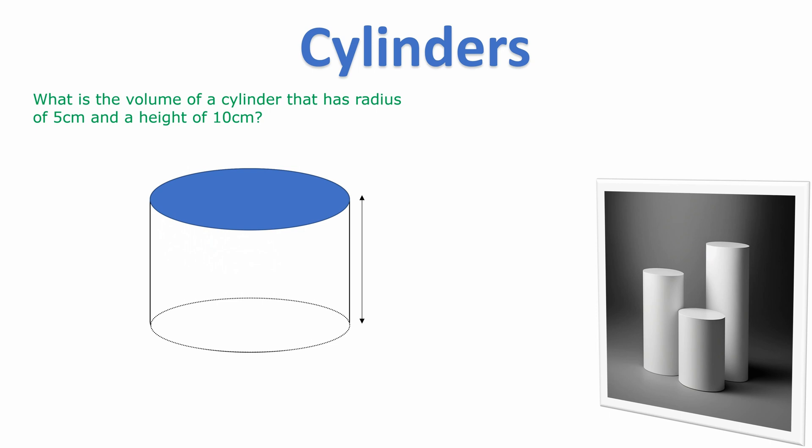The radius of the circle is of course the line from the center of the circle to the circumference. And so we're merging that formula for the area of a circle which is πr² with the height. We're just multiplying that area by the height. That's where the formula comes from and that's how I want you to remember it.